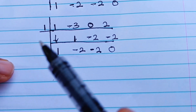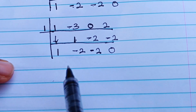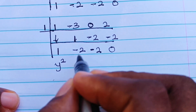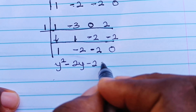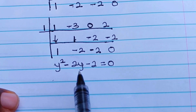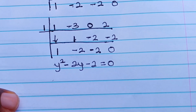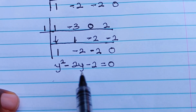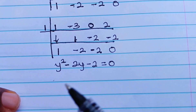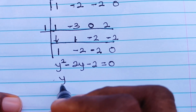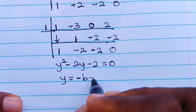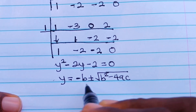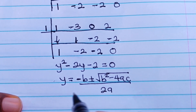So the next equation we form — a quadratic equation — is y² minus 2y minus 2 equals 0. This particular quadratic equation cannot be solved using the factorization method. So we are going to solve it using the quadratic formula, which states that y is equal to (−b ± √(b² − 4ac)) / 2a.